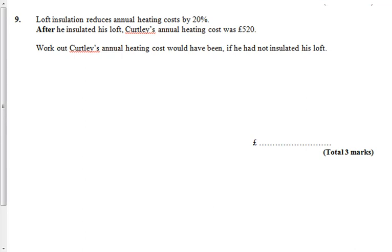Loft insulation reduces the annual peak of the cost by 20%. After it's insulated, Kirby's annual bill is £520. So after it's been reduced by 20%, it's now at £520. So compared to what it was originally, 80% of the original bill is £520.